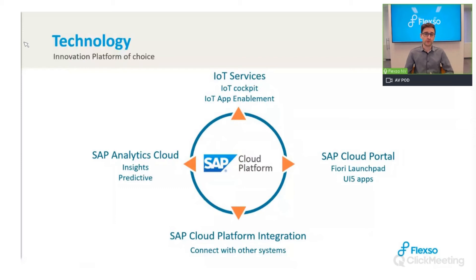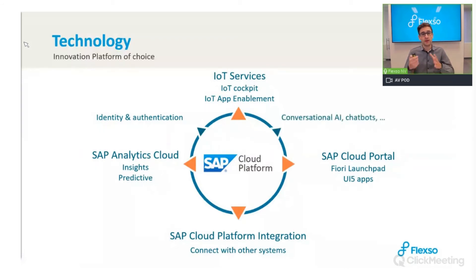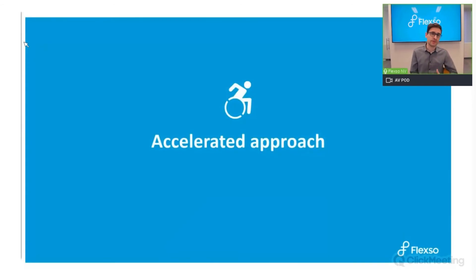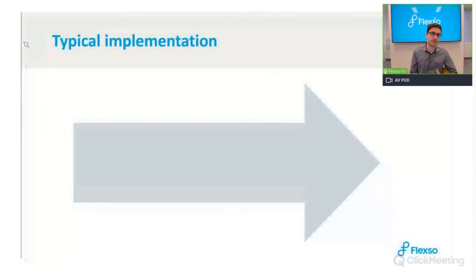This can be integrated with SAP systems or others via CPI. We can add services like identity providers, chatbots offering conversational experiences where customers ask 'How is my machine running? Are there any problems?', machine learning, and API management where you can even monetize data going out of your IoT platform. We offer all of this in an accelerated approach because it works.